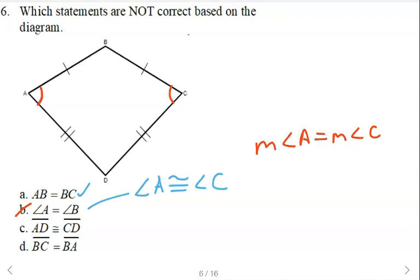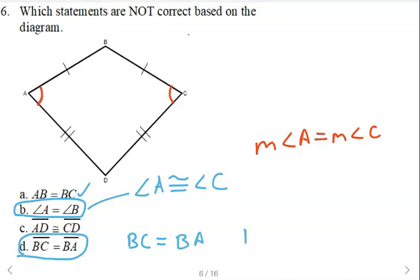AD congruent to CD — that's a correct statement. BC congruent to BA — that is not correct either. So this one is not correct because you're using the wrong angles, and angles are congruent or their measures are equal. The other is not correct because it should say BA congruent to BC, or segment BC is congruent to segment BA. Segments can be congruent; their measures or distances are equal.